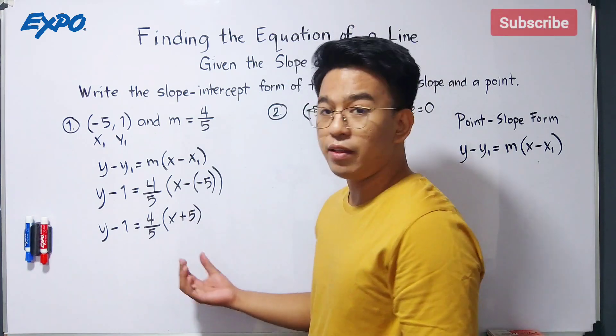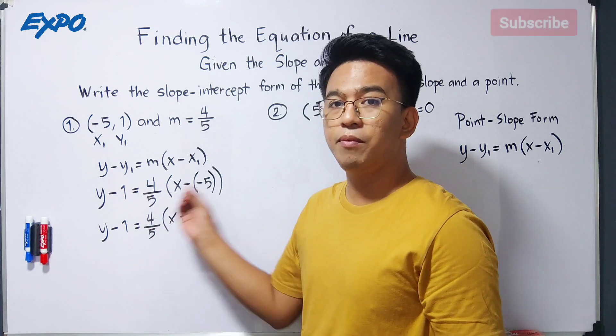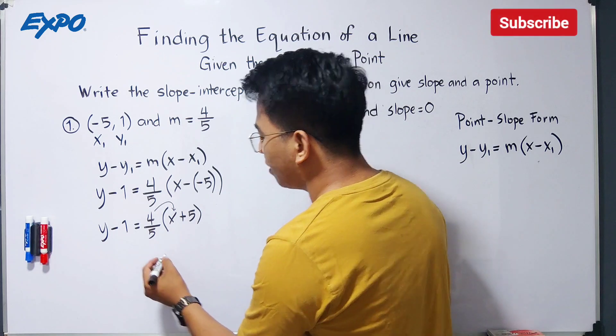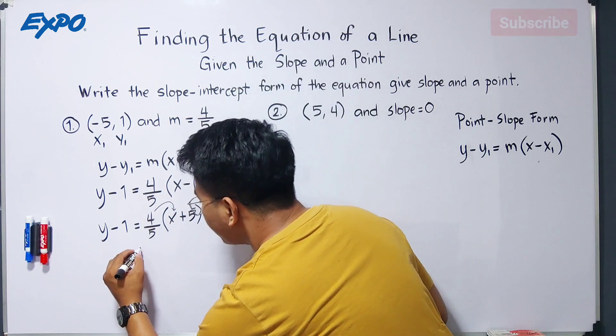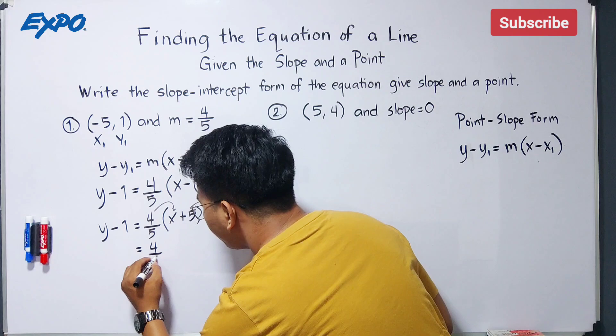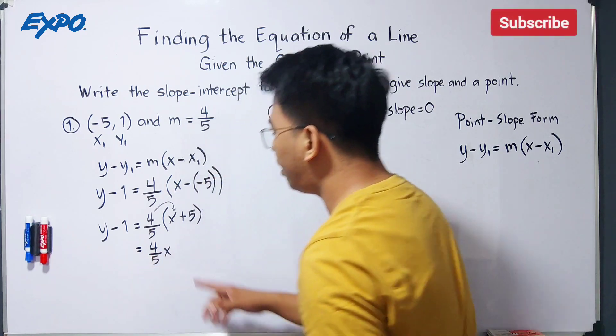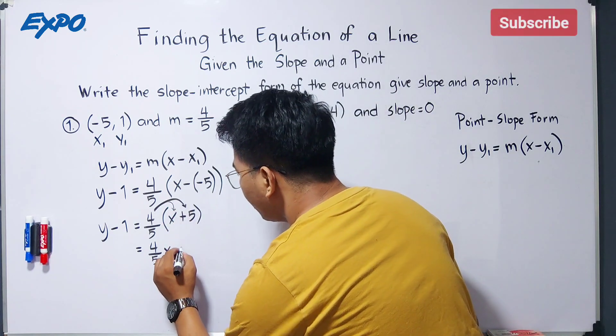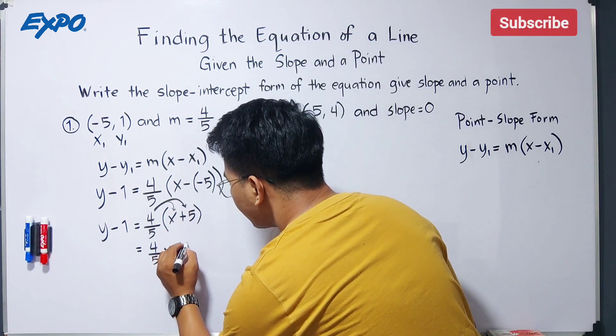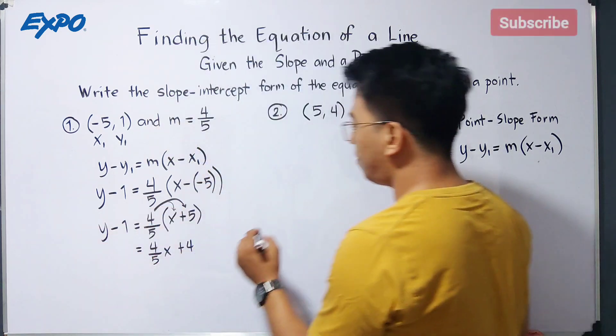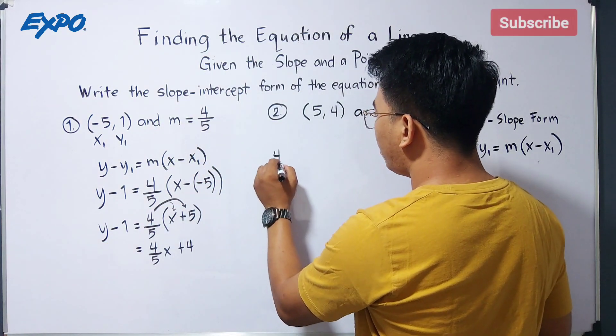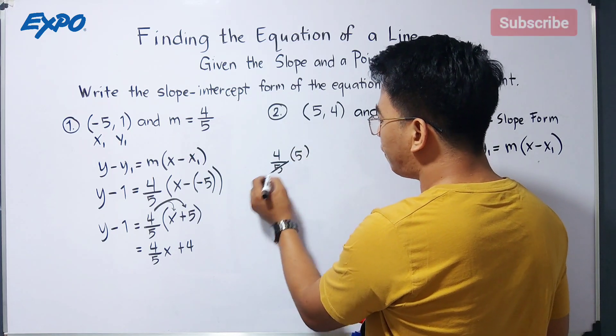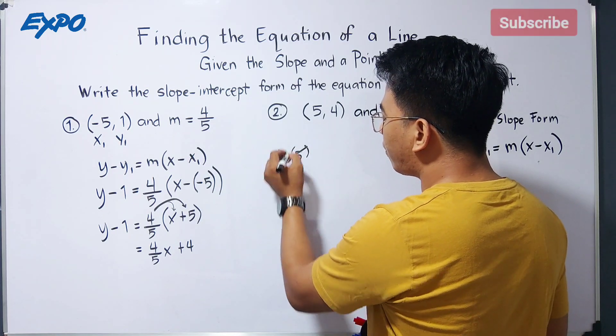Next thing to do is to use the distributive property to multiply this. 4 over 5 times x, that is 4 over 5x. And here, 4 over 5 times 5, that is equal to plus 4. How did this become plus 4? Let me show you. We have 4 over 5 times 5. As you can see, we can cancel out 5 and 5 here. So what will remain is simply 4.